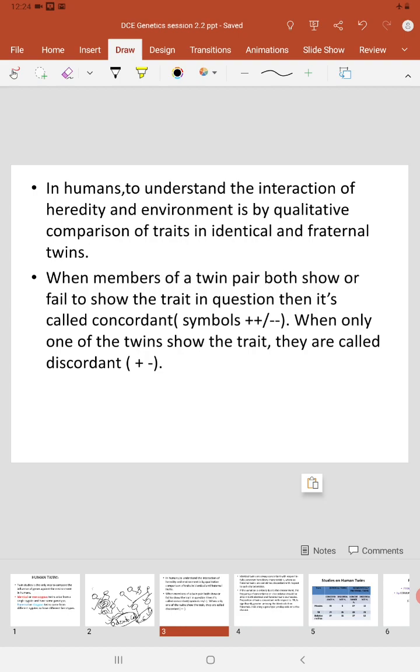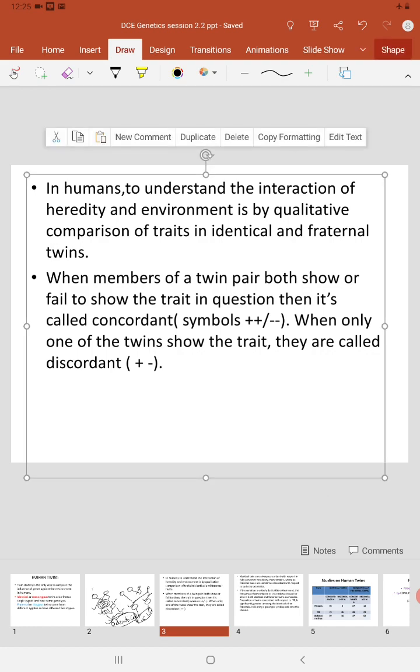When members of a twin pair—we are taking into consideration identical twins on one side and fraternal twins on the other side—when members of a twin pair both show a particular trait in question, we are going to study the incidence of diabetes mellitus or measles or TB in the twins, both among identical and non-identical twins. If both of them show the particular trait under observation, it is represented by plus and plus. If both fail to show that particular trait, it is represented by minus and minus. When both either show or do not show, it is called concordance or concordant.